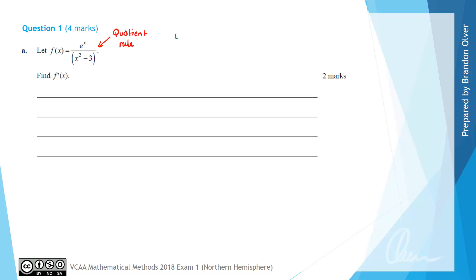So to apply the quotient rule, we're going to let u be the top function, which is e^x, and v will be the function in the denominator, which is x^2 - 3. So du/dx is going to equal e^x, and dv/dx is going to equal 2x.